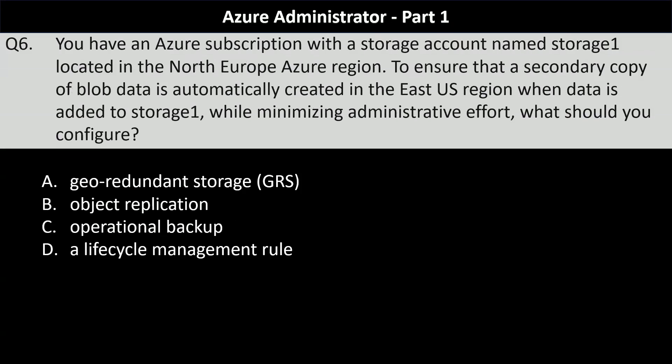Next question. You have an Azure storage account named Storage1 located in the North Europe Azure region. To ensure that a secondary copy of blob data is automatically created in the East US region when data is added to Storage1 while minimizing administrative effort, what should you configure? Your options are geo-redundant storage, object replication, operational backup, or a lifecycle management rule. The correct answer is object replication.